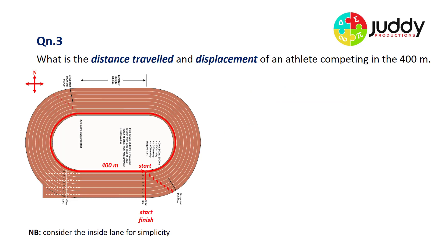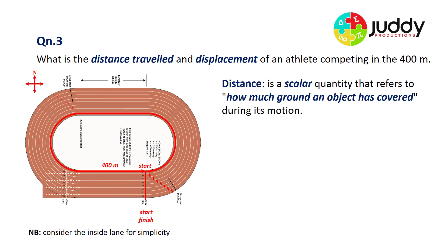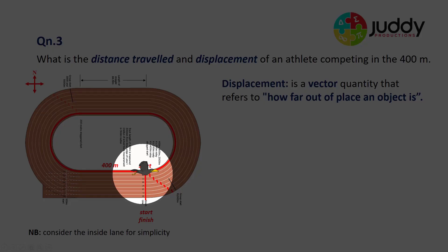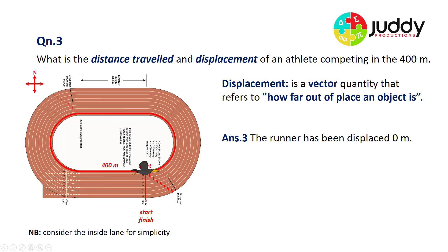Question three: what is the distance travelled and displacement of an athlete competing in the 400 metres? Starting at the 400, a complete lap, and back we come — again a staggered start. Distance is a scalar quantity, and in this case the runner has covered a distance of 400 metres. In terms of displacement, the runner starts and finishes at exactly the same position, so this runner is not displaced at all. We'd state that the runner has been displaced zero metres, with no need for direction as there is no displacement.